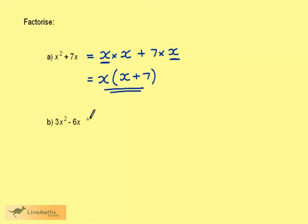Now for 3x squared minus 6x. 3x squared can be written as 3 times x times x. We then have the minus sign. And 6x could be written as 3 times 2 times x. We have a 3 common and we have an x common.